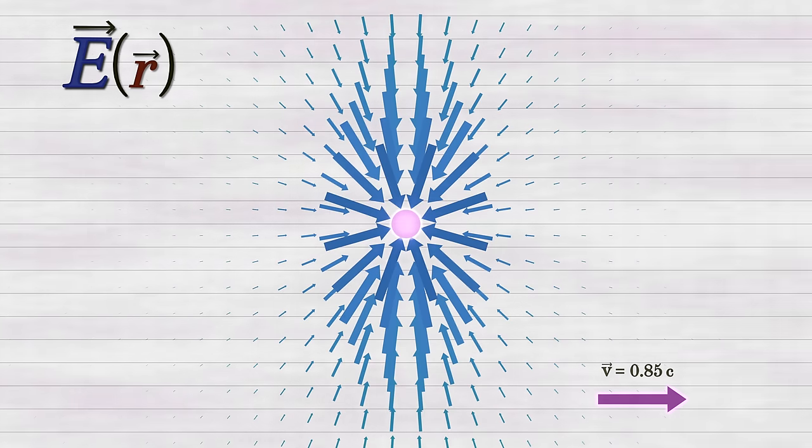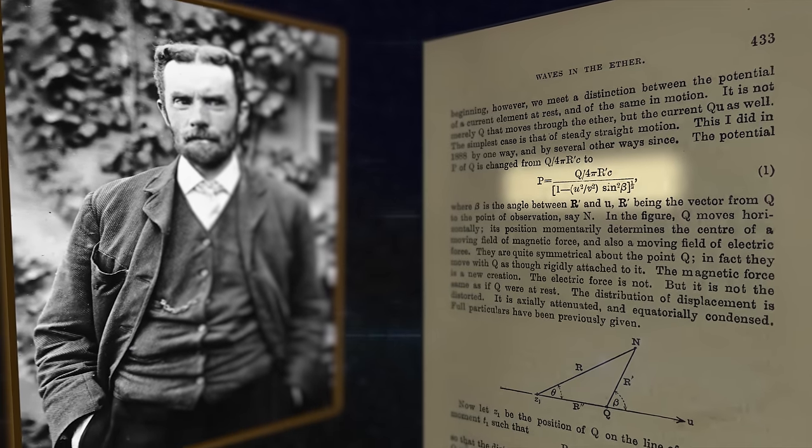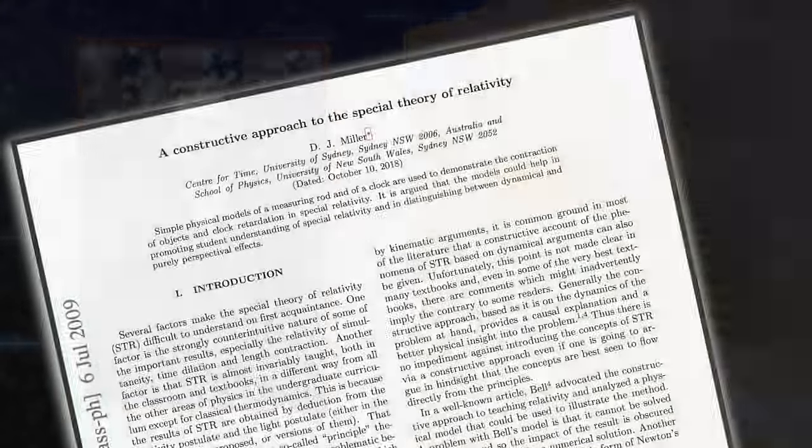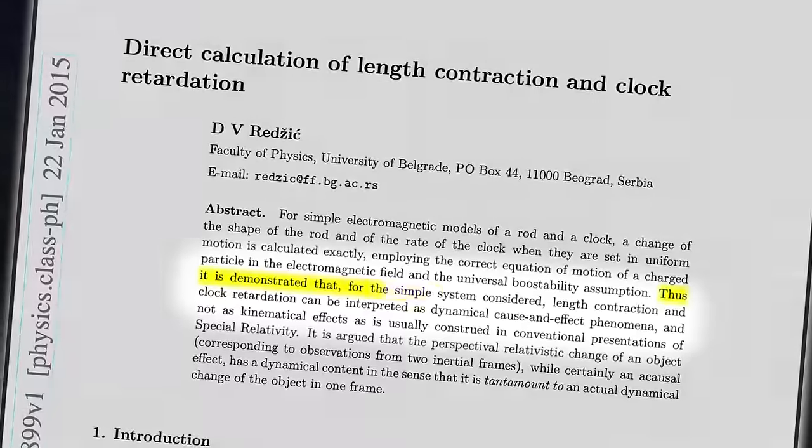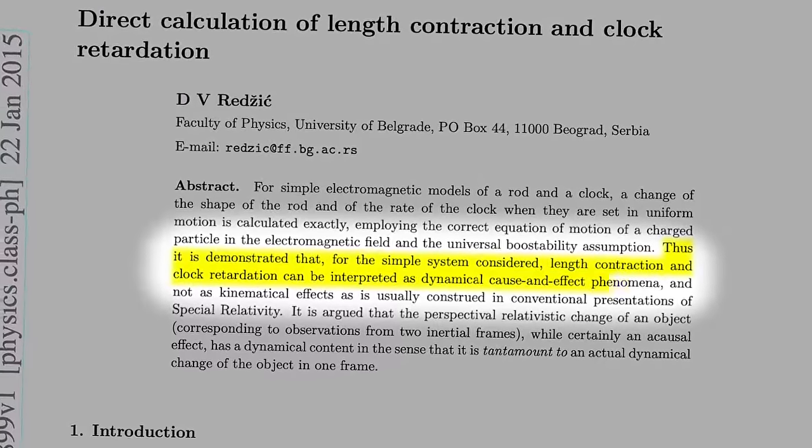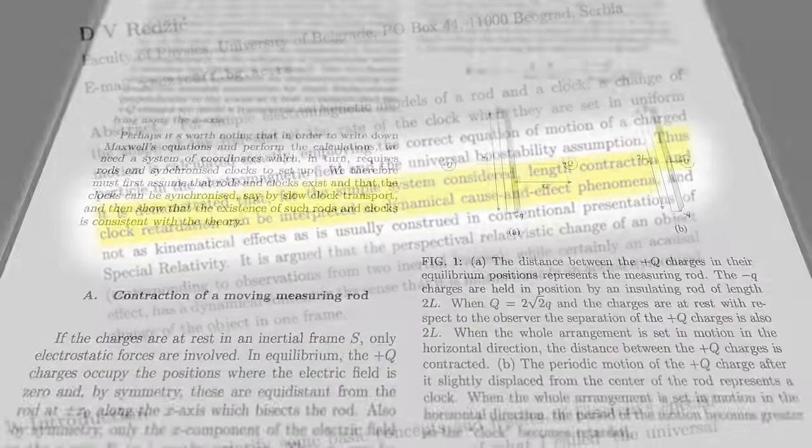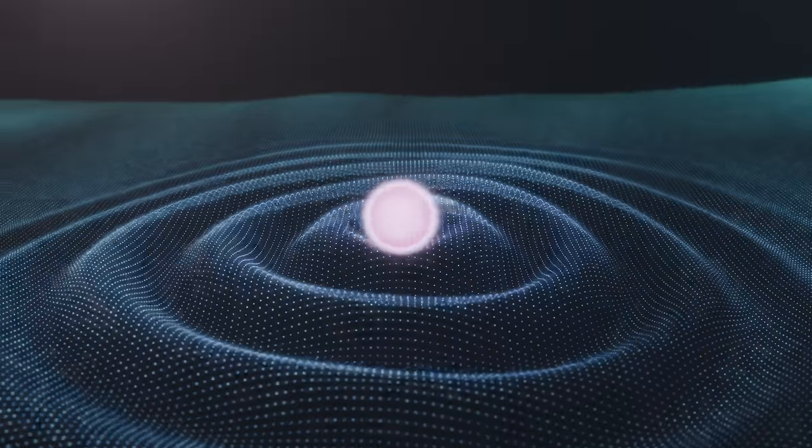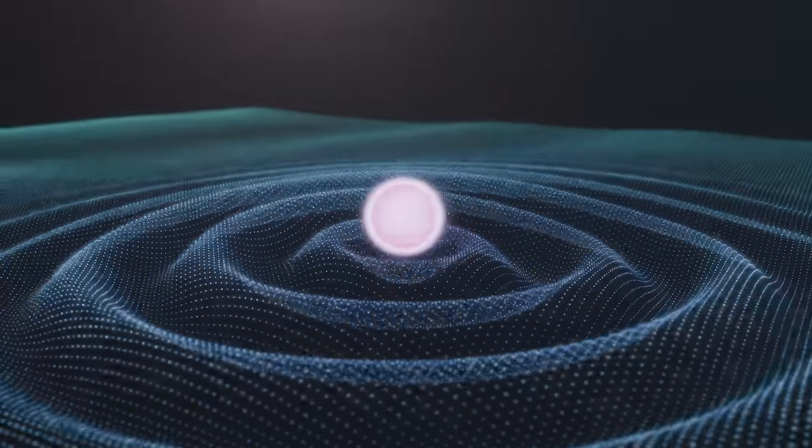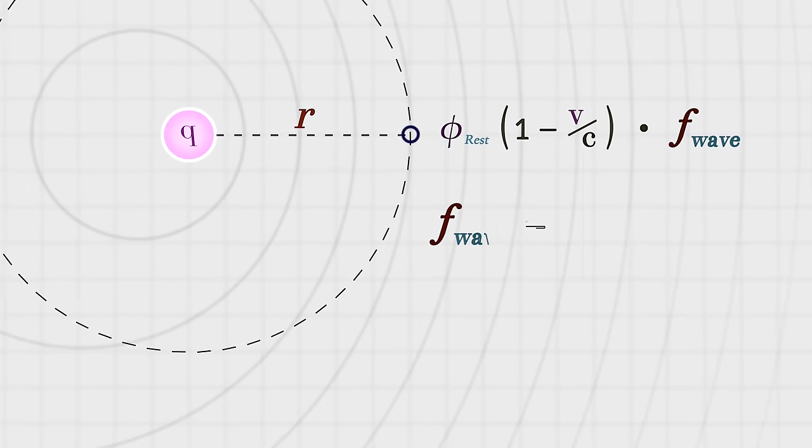What's incredible, of course, is that this use of retarded potentials dates all the way back to Heaviside. And even today, you can find a variety of authors utilizing it to demonstrate how both length contraction and time dilation can be derived in a completely classical fashion. However, no one seems to have ever explicitly put this sort of dynamical wave interpretation upon it, despite the fact that it renders the mathematics almost immediately intelligible.